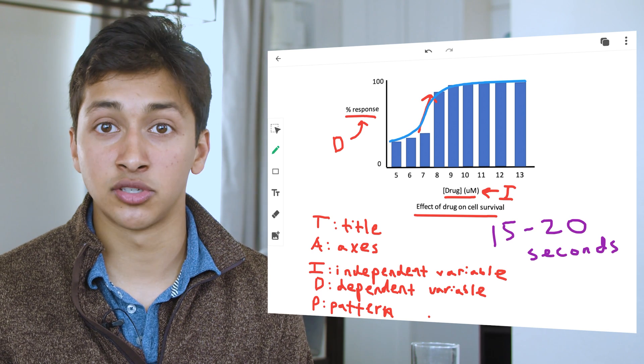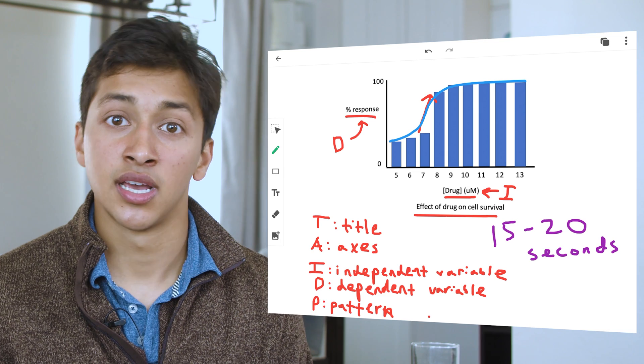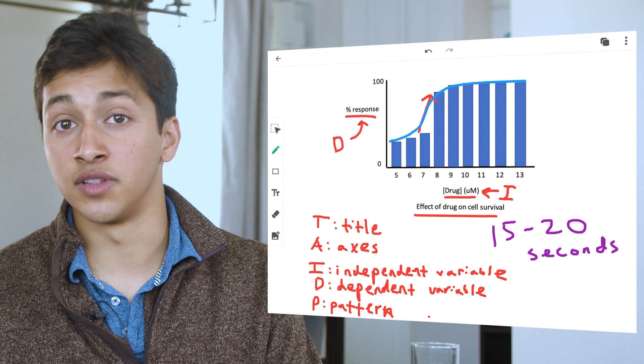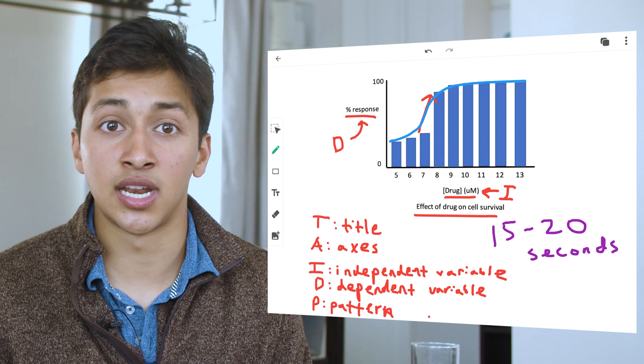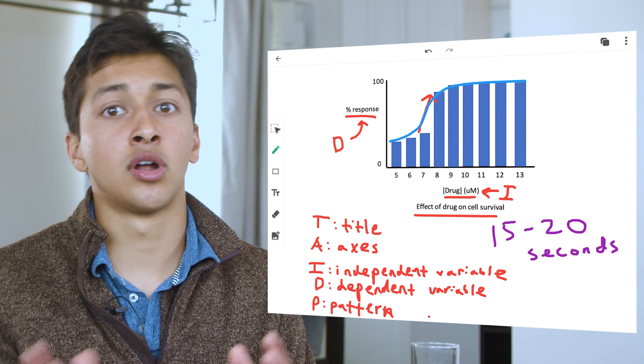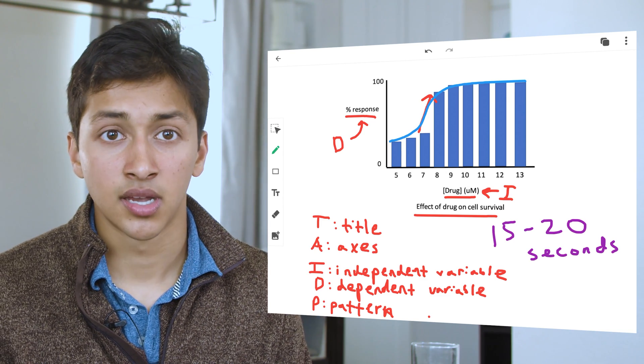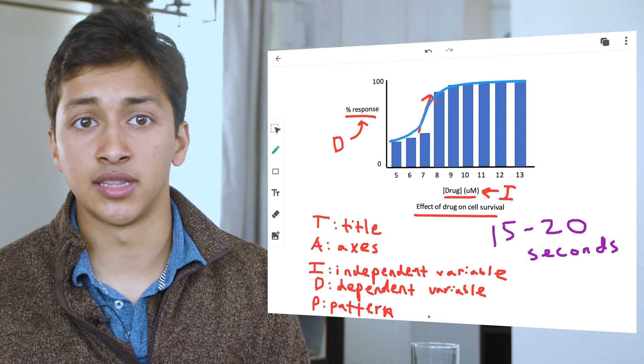For example, if an MCAT Biology Biochemistry passage has three figures, they may only ask a question about two of them. So you don't want to waste a minute understanding the figure in great detail if they are not even going to ask a question about it. So how do you get faster at applying the TAIDP method?